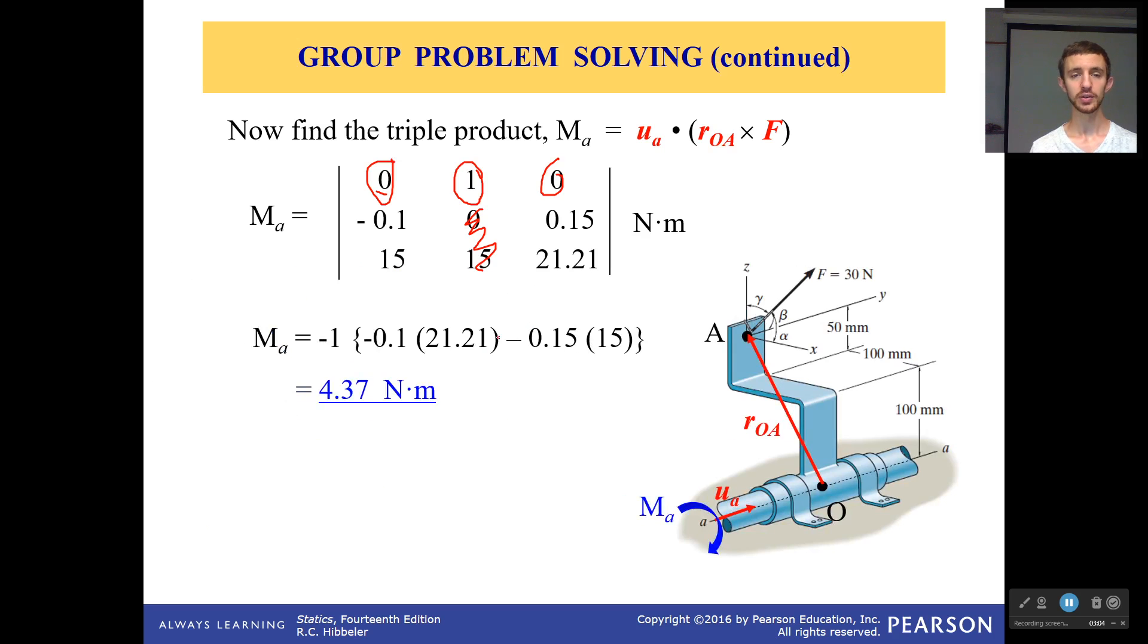However, be very careful that you do not forget that negative sign because the j does it in the wrong order. i cross k is equal to negative j. It doesn't go in the right order. And that gives us, after multiplying it all out and plugging our calculators, 4.37 newton meters. And that should be counterclockwise around it.